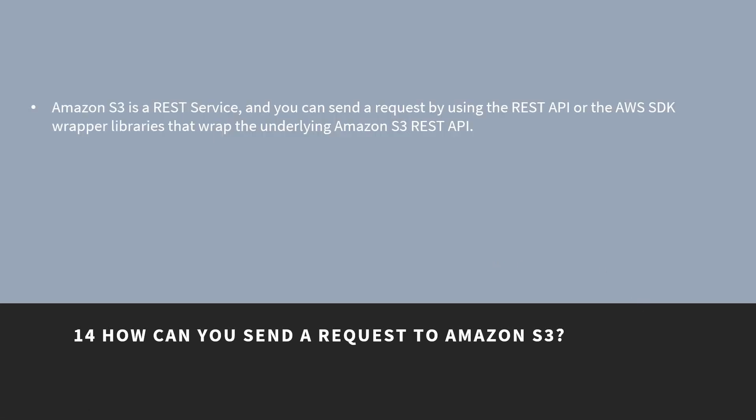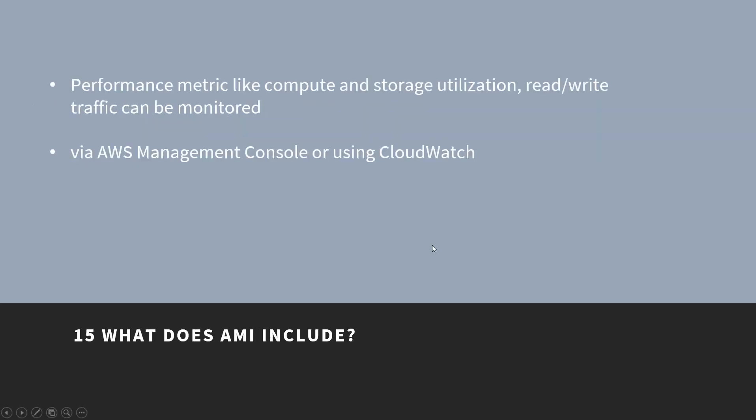How can you send a request to Amazon S3? Amazon S3 is a REST service and you can send a request using the REST API or the AWS SDK wrapper libraries that wrap the underlying Amazon S3 REST API. What does AMI include? AMI includes a template for the root volume for the instance, launch permissions to decide which AWS accounts can use the AMI to launch instances, and a block device mapping that determines the volumes to attach to the instance when it is launched.